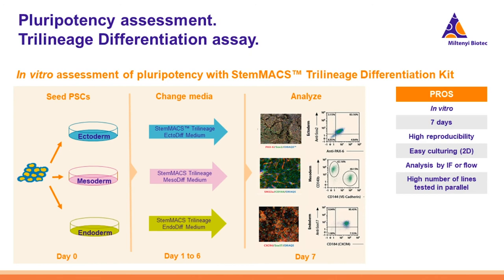An alternative in vitro test that can be used to quickly assess the pluripotency of a PSC line is the Trilineage Differentiation Assay. This test uses cytokine-containing media that allow directed differentiation into ectodermal, mesodermal, or endodermal lineages — so if a line is a true PSC, it will be able to differentiate. One PSC clone is plated into three separate wells, each fed with a specific media from the kit consistent with one of the three germ layers. Already at day seven, the cells are ready to be analyzed by classical immunocytochemistry or with flow cytometry.